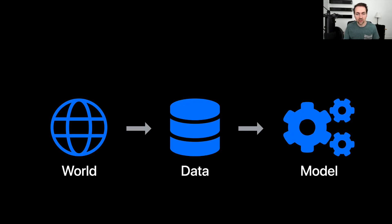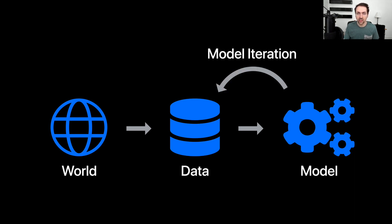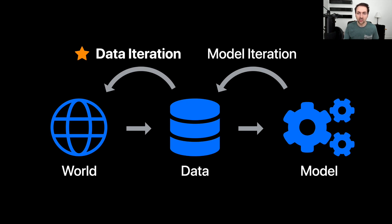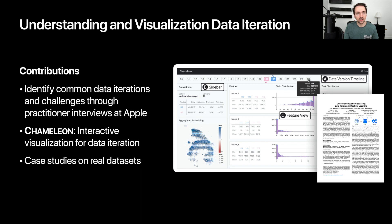So what exactly is data iteration? Looking at the high-level view of machine learning: given the world, we collect and sample datasets from some phenomenon that exists, and from those datasets we construct machine learning models. The data visualization and HCI community has done a great job producing tools to help people do model iteration — things like tweaking hyperparameters and selecting the best model. But there's this whole other part of machine learning, namely data iteration, where instead of changing the modeling code, we're changing the dataset — adding features, removing features, removing points, or adding more points from the world. And there's really a lack of tooling around this area.